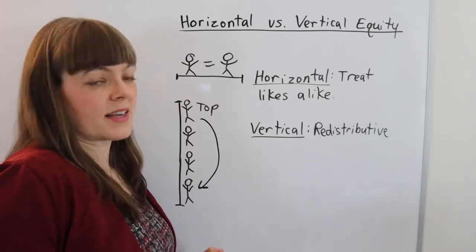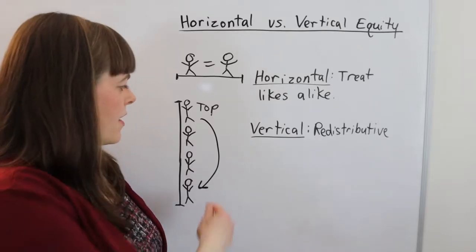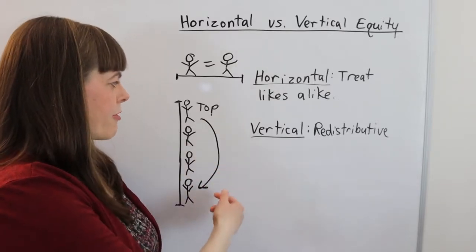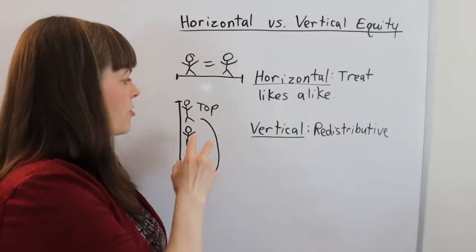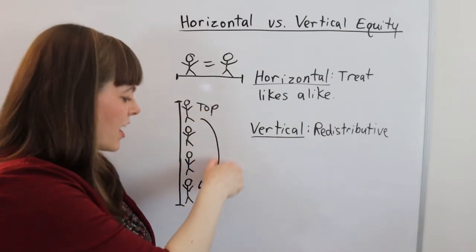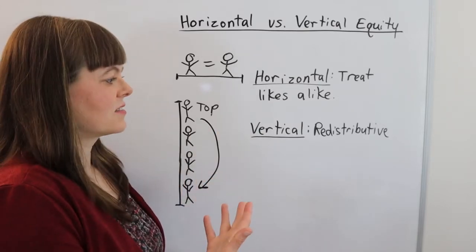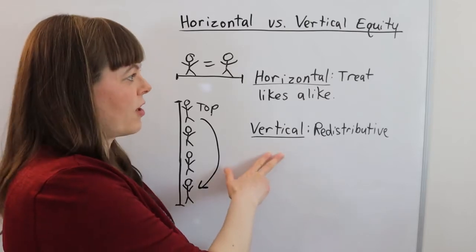But vertical equity could have to do with things that have nothing to do with money, such as opportunities or health. If you line people up from those with the most opportunities or the highest health, and there are policies that can channel resources or opportunities toward people with less, that is going to improve vertical equity.